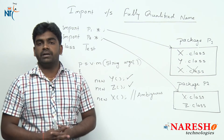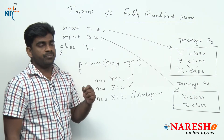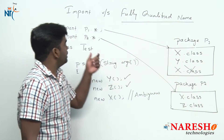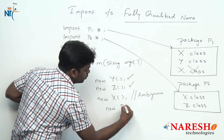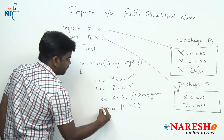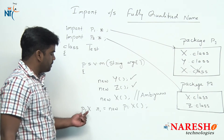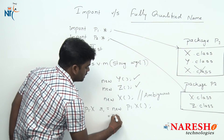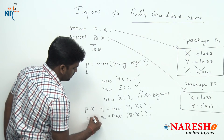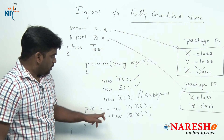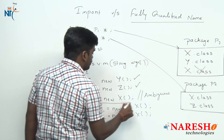In this situation we should go for a fully qualified name — this is the only advantage. Whenever we want to access two classes with the same name from two different packages, we cannot use the import statement. Instead, specify very clearly: new p1.X() to load X from p1, and new p2.X() to load X from p2. This way it will load p1's X class and p2's X class correctly.